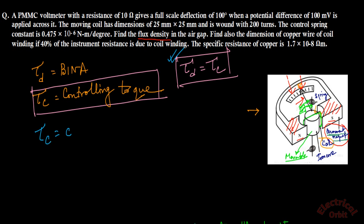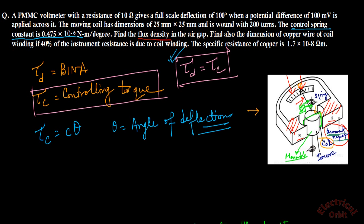The expression for controlling torque is Tc = C × θ, where C is the control spring constant and θ is the angle of deflection — that is, how much the pointer has deflected from its initial zero position.